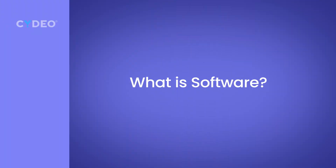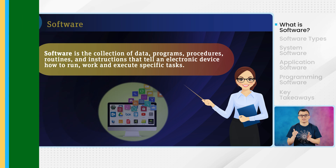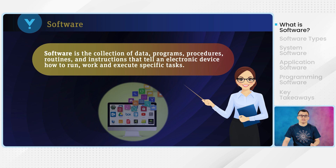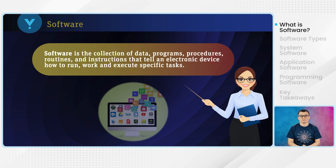So what is software and how is it different from hardware? In the previous video we stated that hardware is the physical components of the computer. Software, on the other hand, is a collection of data, programs, and instructions that tell an electronic device how to work, how to run, and how to execute specific tasks.